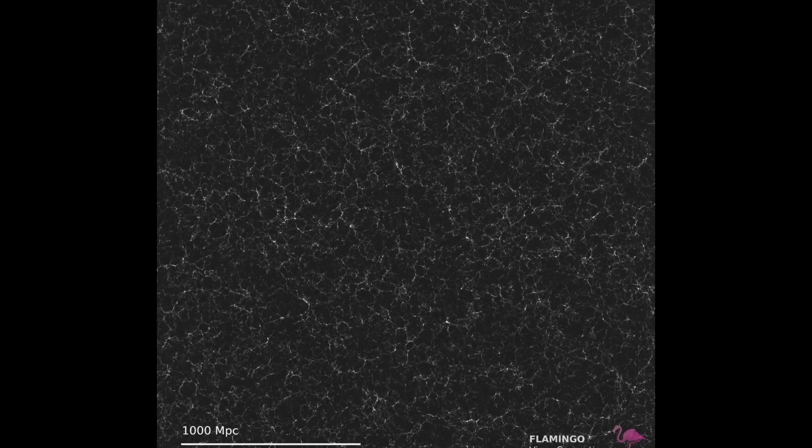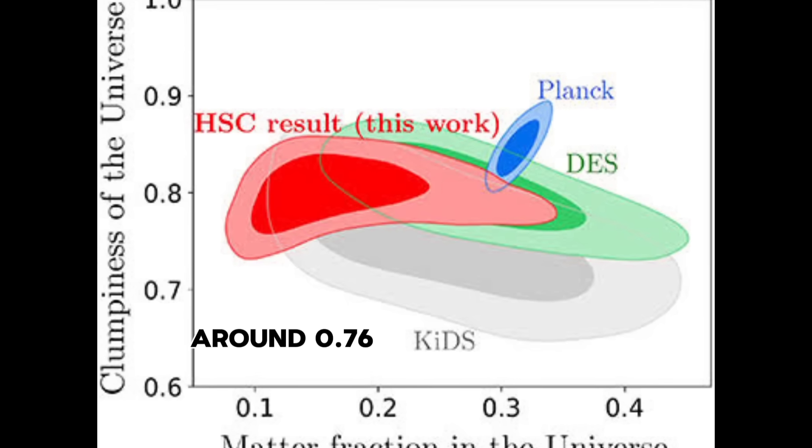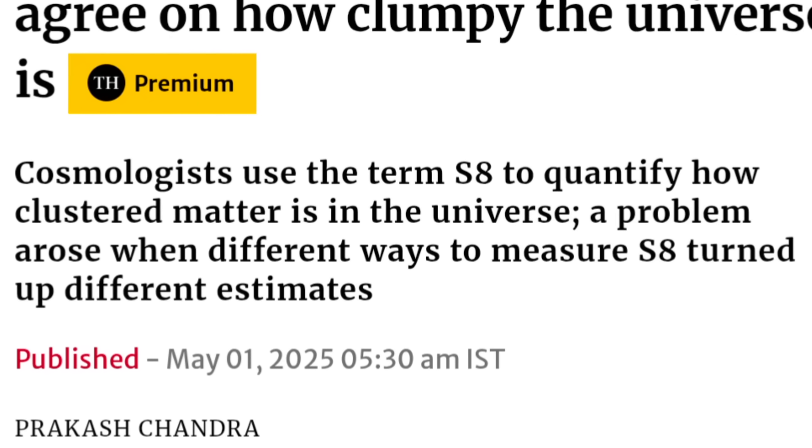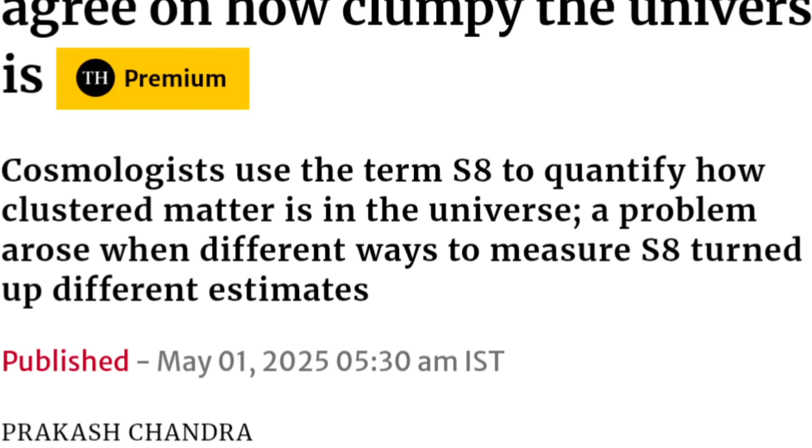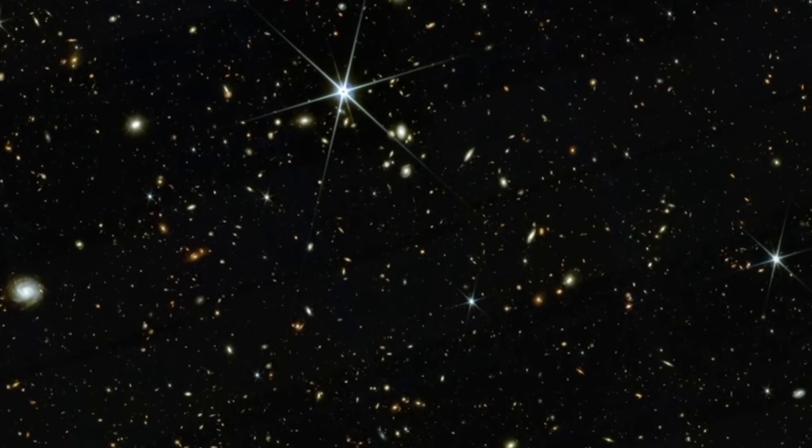But when they look at the present-day universe using telescopes to observe how galaxies are actually clustered today, they get a lower value for S8. The difference might not sound huge, but it's consistent and statistically significant. That means it's not just a mistake or a random error. So what's going on?